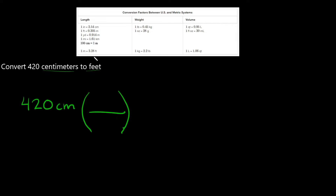Coming up to our table, trying to find the relationship between centimeters and feet. Here it says 100 centimeters is equal to 1 meter, and up here it says 1 foot is equal to 0.305 meters. So as you can see there is no direct relationship from centimeters to feet in this table, but there is a path to get there — we can go from feet to meters, and then from meters to centimeters. So we're gonna have to use these two relationships to get from centimeters to feet.